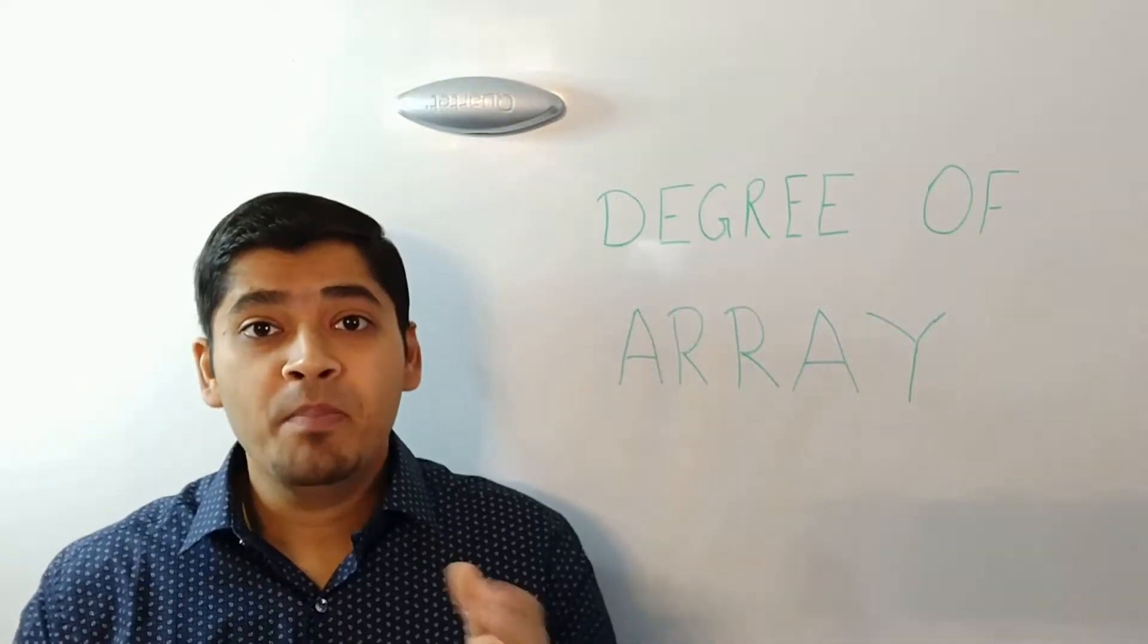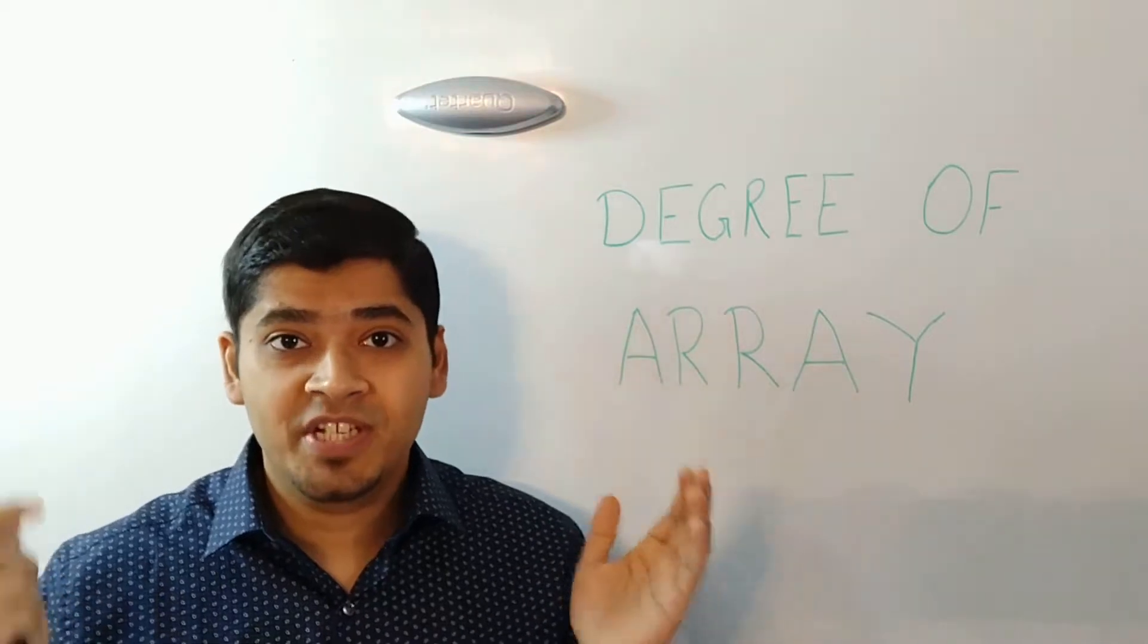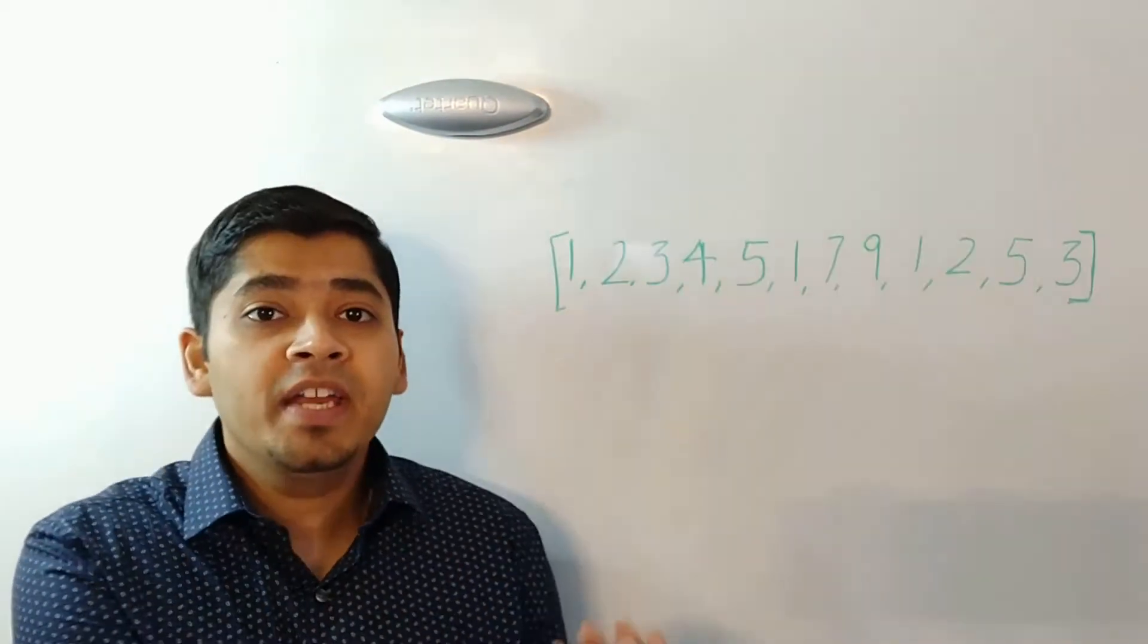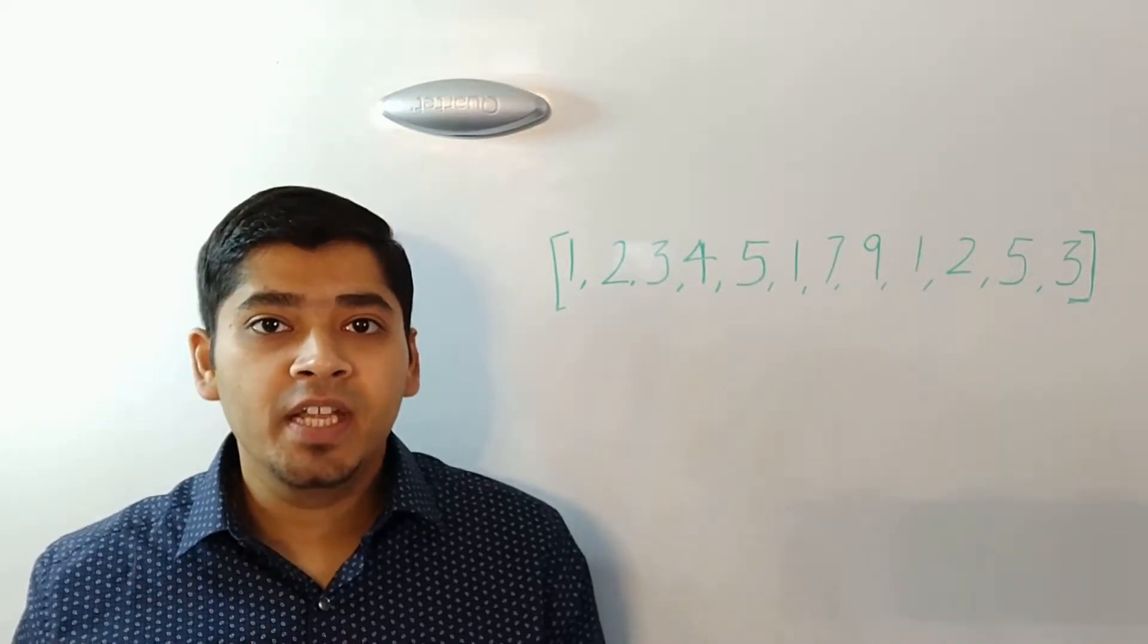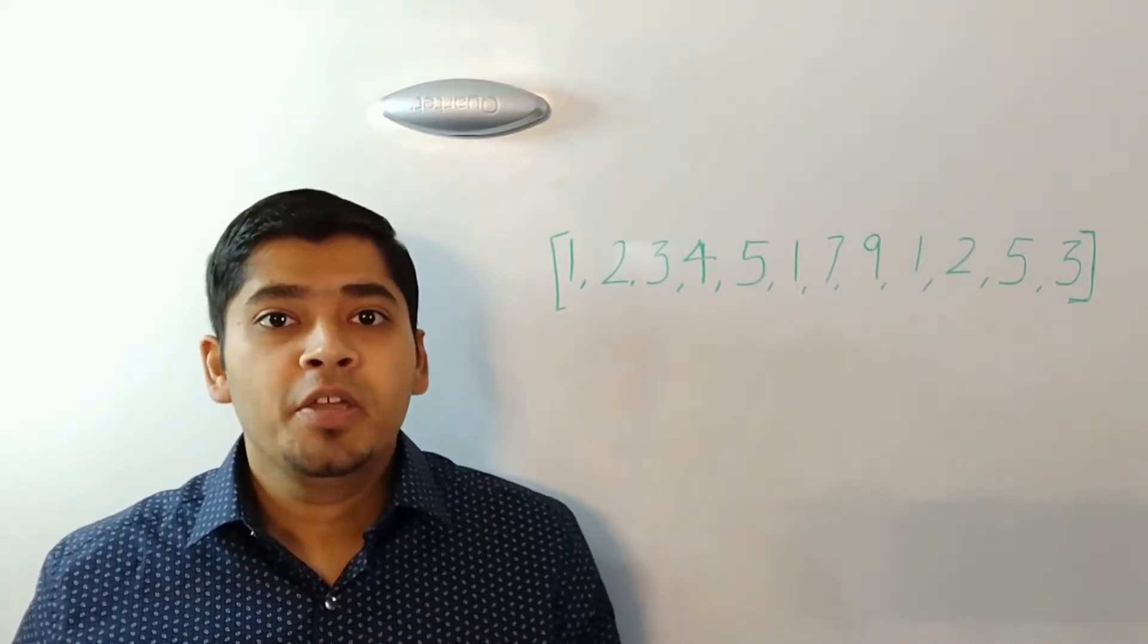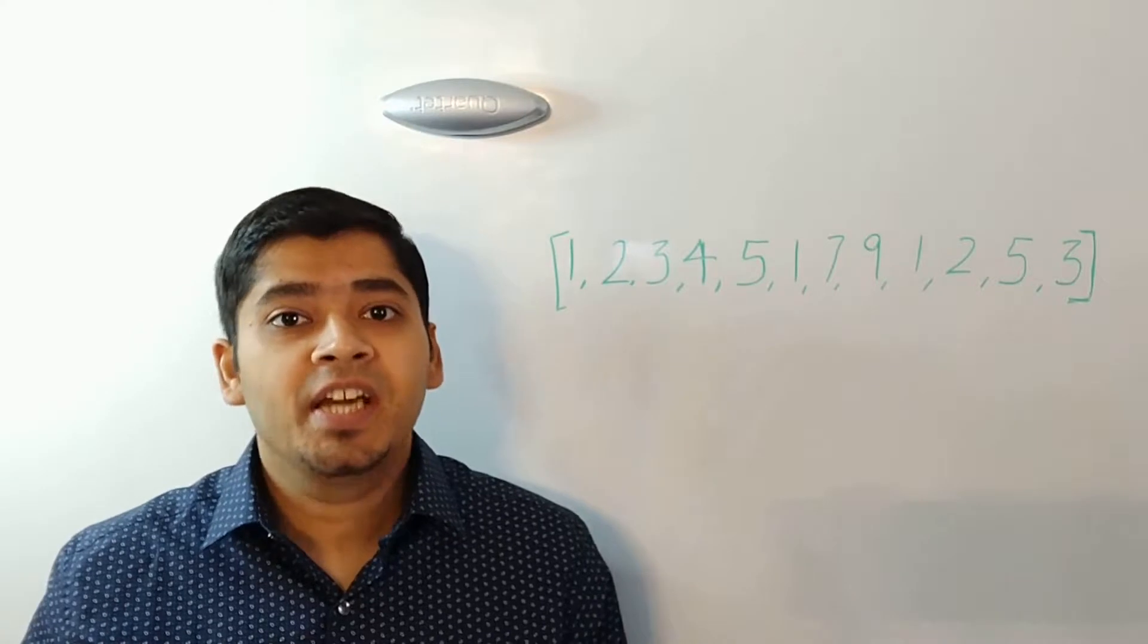To begin with, make sure you understand the question correctly. Write a sample array on the whiteboard and start calculating the degree and ask the interviewer if you calculated the degree correctly.